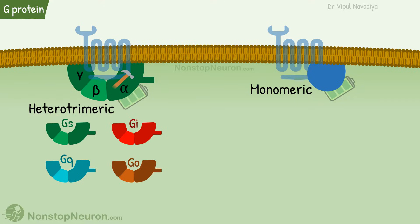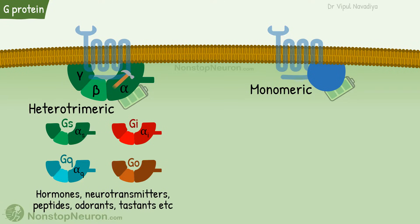They all have a different set of alpha, beta, and gamma subunits. For example, Gs protein contains a type of alpha subunit called alpha-S, Gi protein contains the alpha-I subtype, and Gq protein contains the alpha-Q subtype. This group mediates cellular responses to a wide range of signaling molecules including hormones, neurotransmitters, peptides, odorants, and tastants.